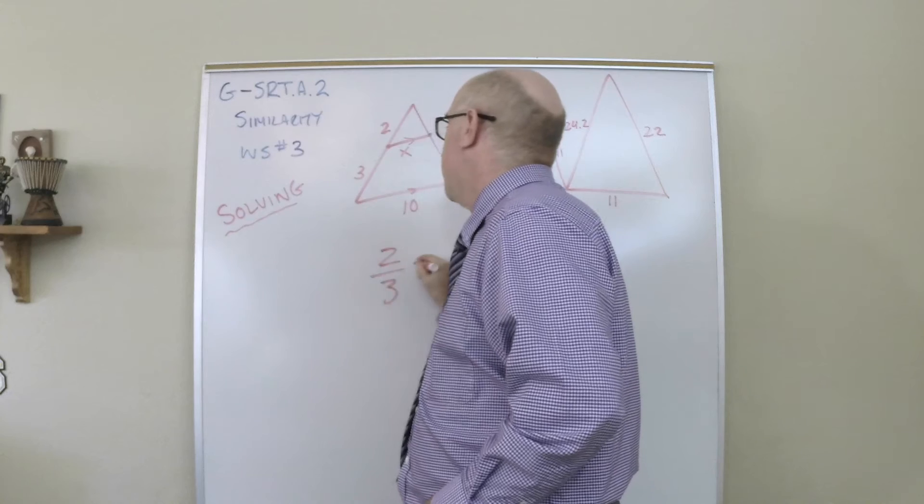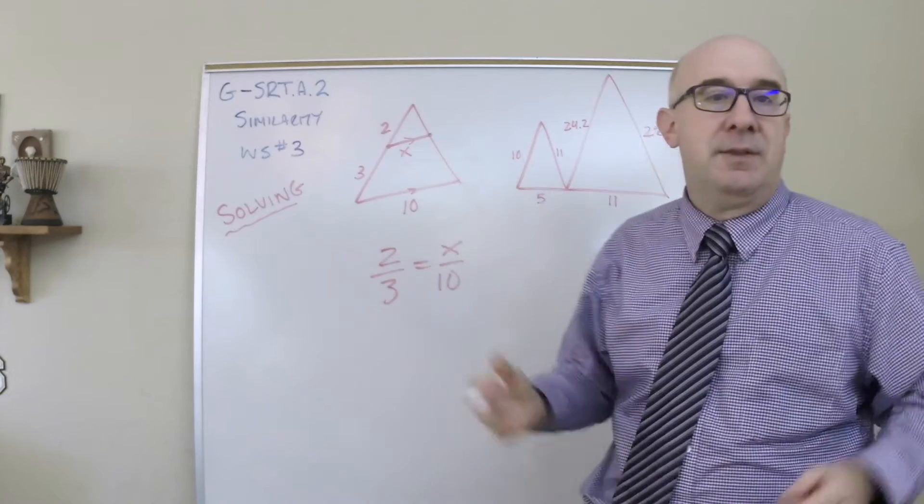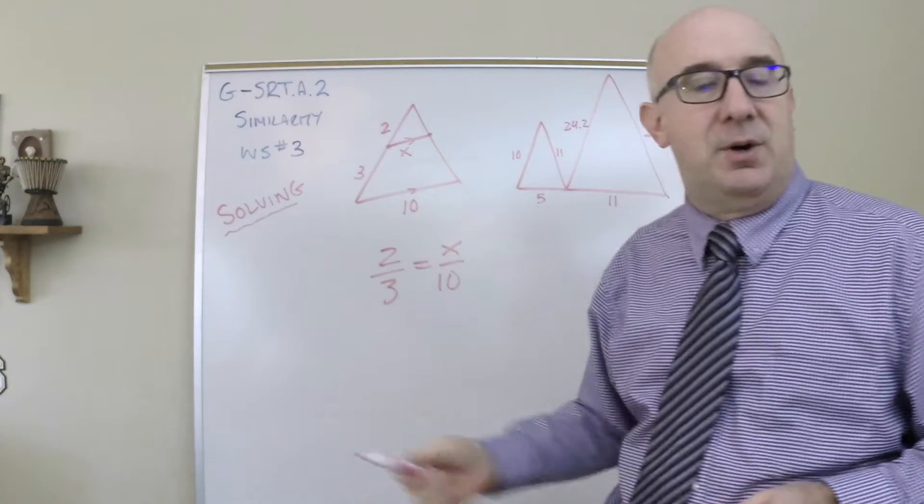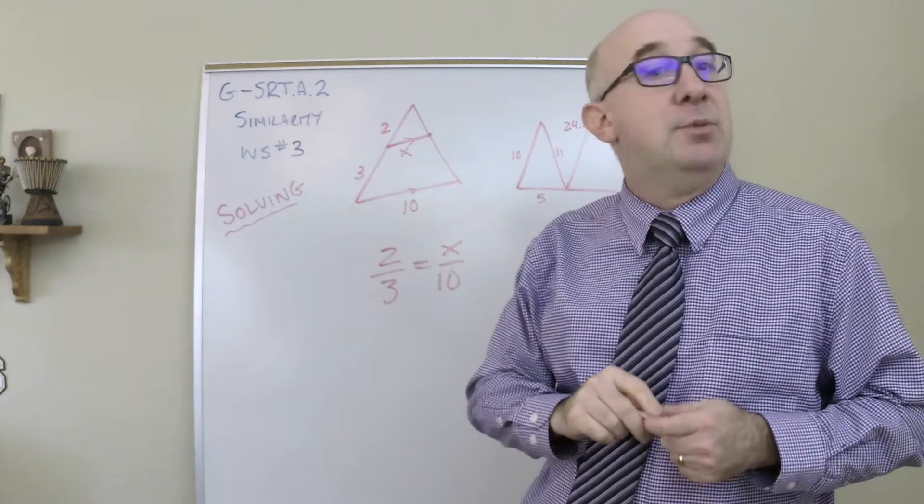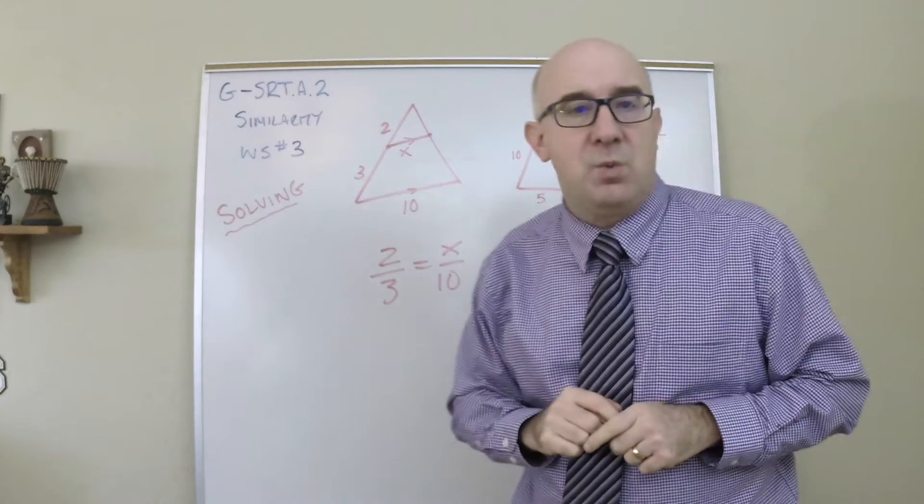Two is to three as x is to ten. Two to three, x to ten. They assume they're on the right track. They cross multiply and move on to the next question. This is totally wrong. And here's why.